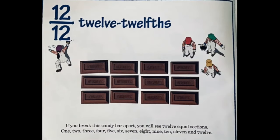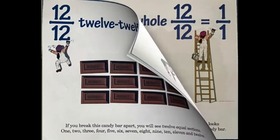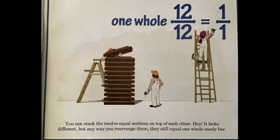If you break this candy bar apart, you will see 12 equal sections: 1, 2, 3, 4, 5, 6, 7, 8, 9, 10, 11, and 12. You can stack the 12 equal sections on top of each other. It looks different, but any way you rearrange them, they still equal one whole candy bar.